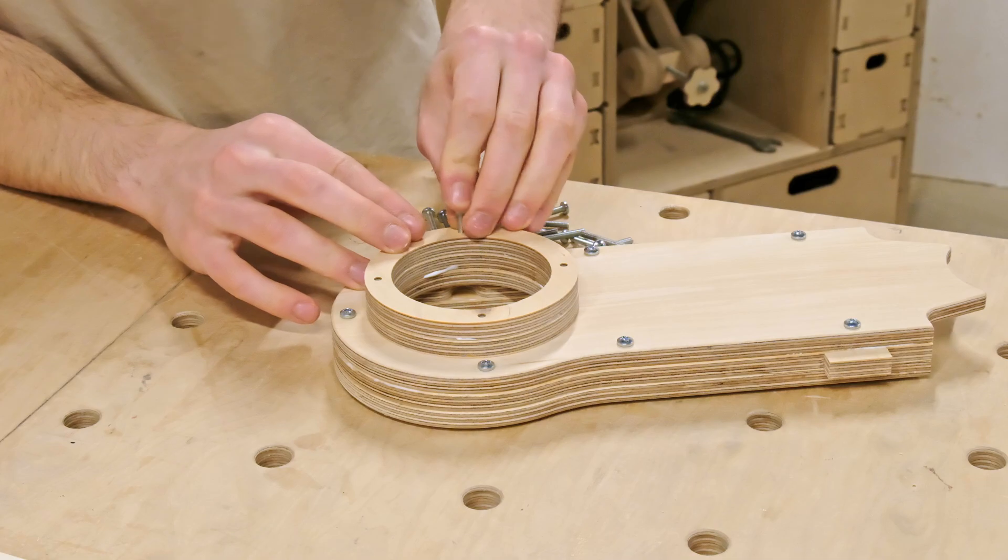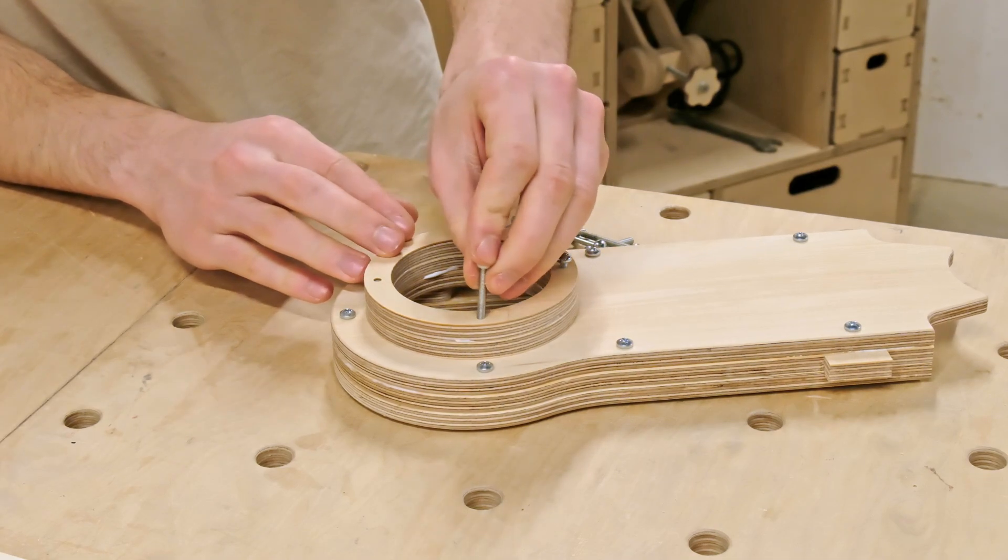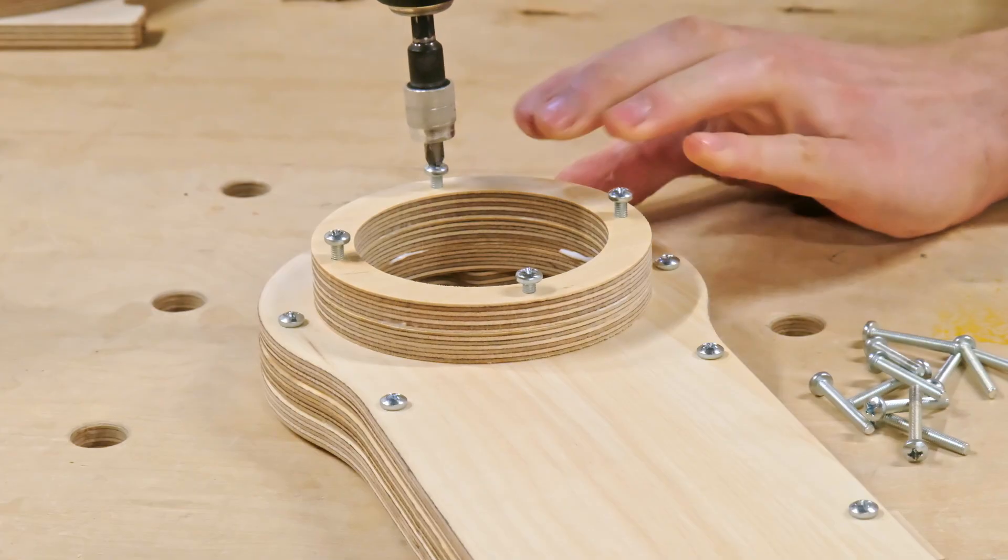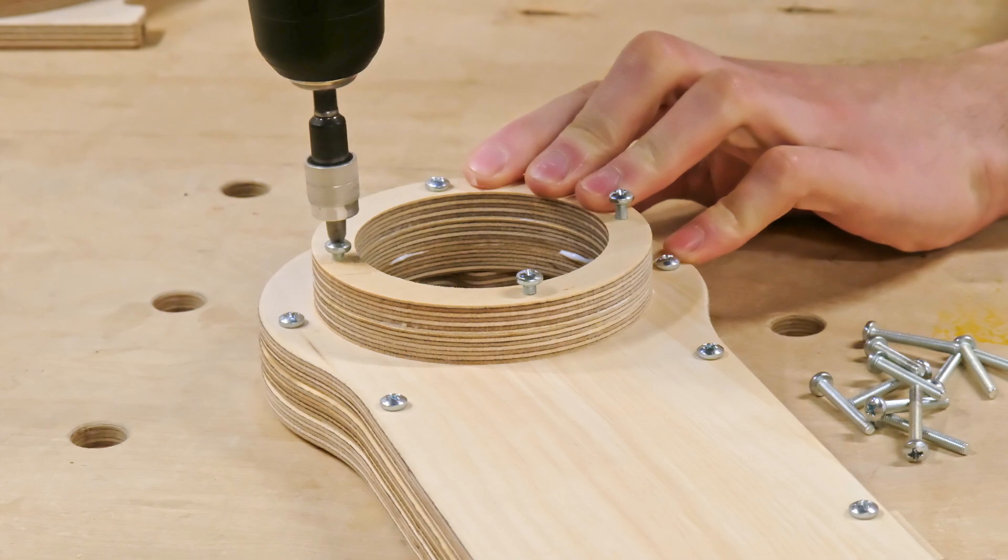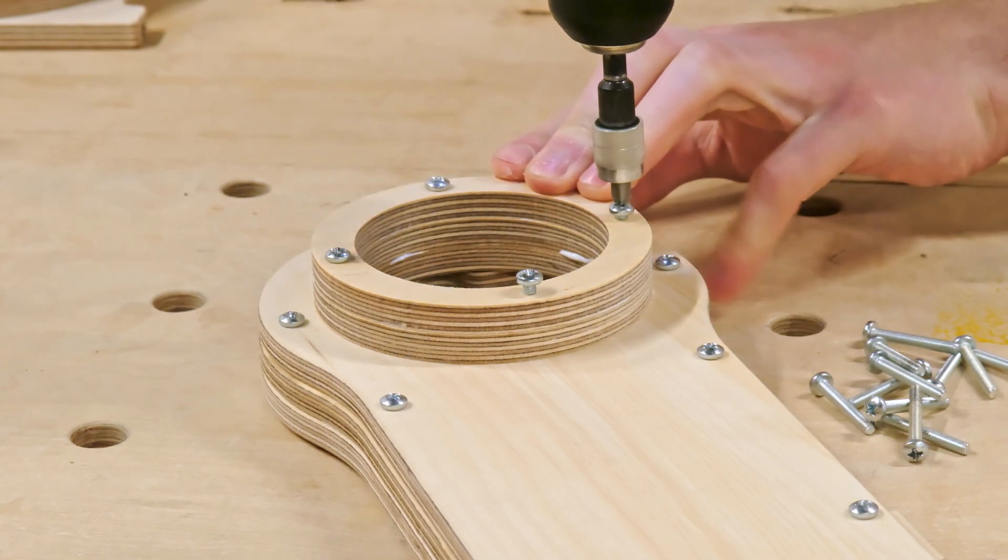This time the screws solve not only the positioning and clamping tasks, but also will ensure the tube mount parts won't delaminate when securing the dust hole.